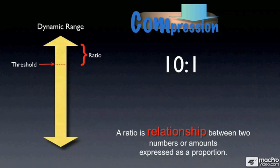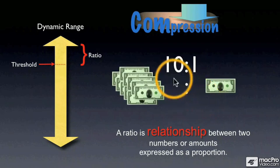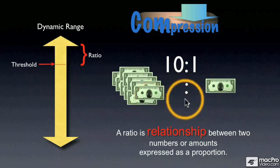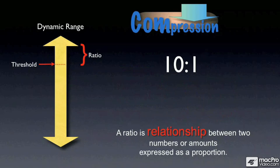Let's forget about penguins. Let's talk about something we all understand — money. Let's say you have a record deal, and for every $10 that the record company makes, you get one. That's a relationship or proportion of 10 to one, or 10%.